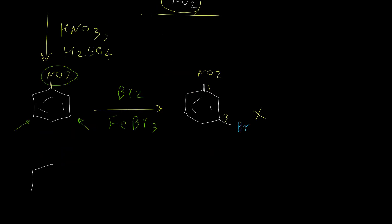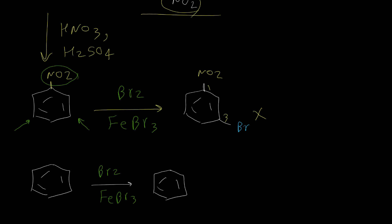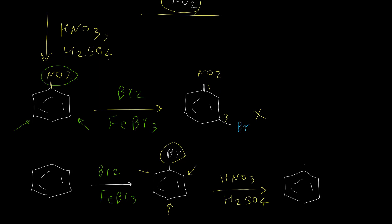But if I perform the bromination reaction first, then our first-step product is bromobenzene. This bromo group is an ortho and para director. So when in the next step I perform nitration, the nitro group goes to the ortho and para positions. By reversing the sequence of these synthesis steps, we were able to successfully synthesize the final product.